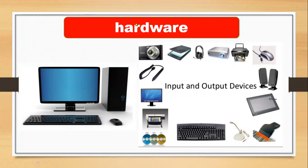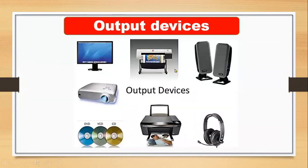In the previous lesson, we learned that hardware has input and output devices. These hardware devices make up a computer and help make our work easier. The output devices include: monitor, printer, speakers, projector, color printer, CDs, and headphones. These help us print, listen to music, and see results on the monitor.